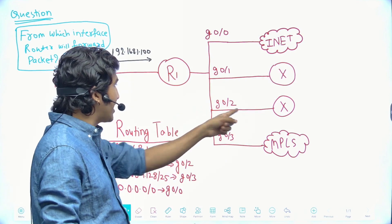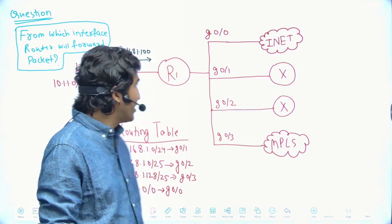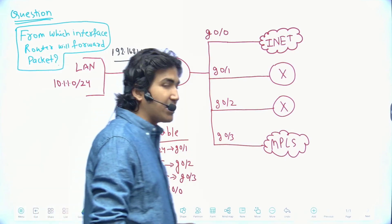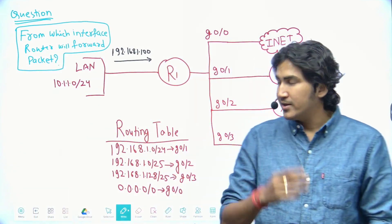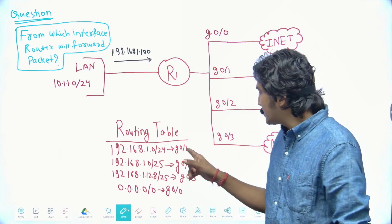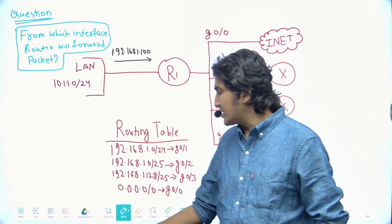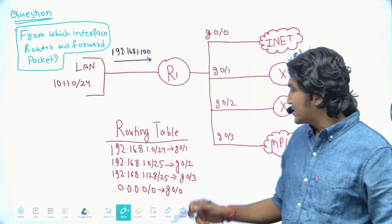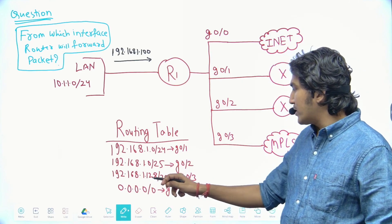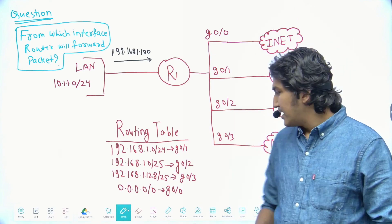G0/0 of Router 1 is connected with the internet router, G0/1 is connected with this router, G0/2 and G0/3 with the MPLS router. In the routing table of Router 1, there are four routes: 192.168.1.0/24 on interface 0/1, and 192.168.1.0/25 on interface 0/2.